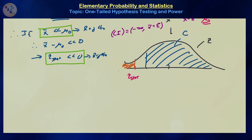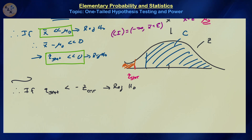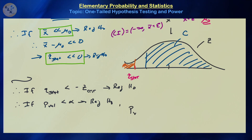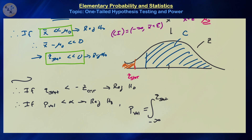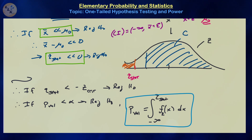To summarize: if the z-test statistic is less than the negative z-critical value, that implies rejection of the null hypothesis. Similarly, if the p-value is less than alpha — our Type I error probability — we also reject the null hypothesis, where the p-value is calculated as the integral from minus infinity up to our z-test statistic of the distribution of interest. That's how you calculate p-values, test statistics, and construct confidence intervals in the one-tailed world.